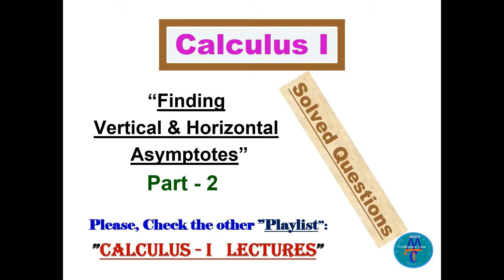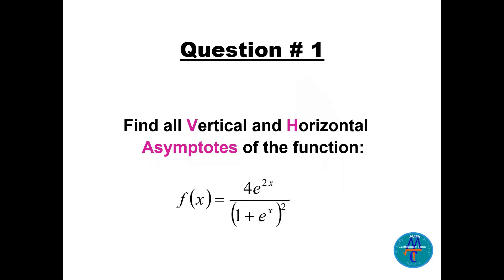Hello, my friends. This is Calculus One solved questions: finding the vertical and horizontal asymptotes, part two. Please check part one for other questions.